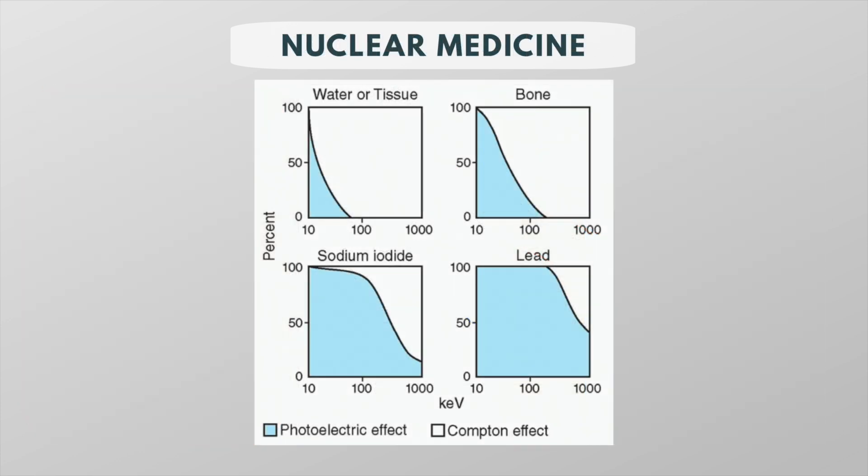So in summary, in the practice of nuclear medicine where gamma rays between 50 and 550 kV are used, Compton scattering is the dominant type of interaction in material with lower atomic numbers such as human tissue and air.